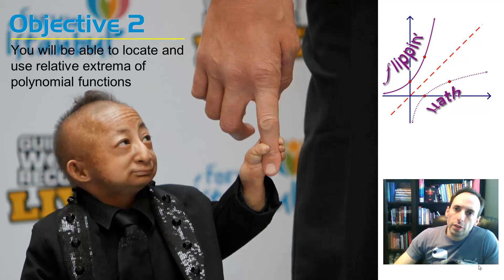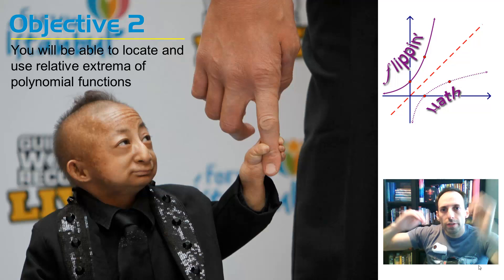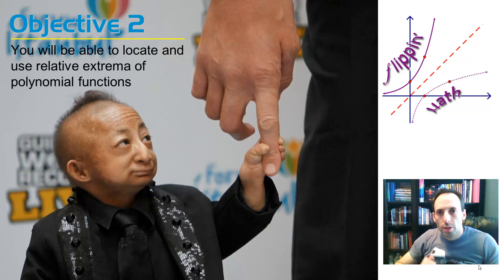So here we are at objective two, and what we're doing in objective two is locating and using what are called relative extrema of polynomial functions. What that means is fancy terms for where are the humps on our graph, where do those y values, the x values for each one of those humps go?